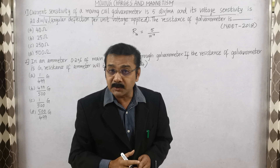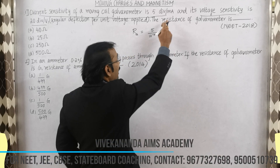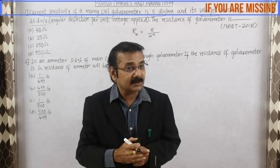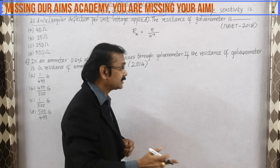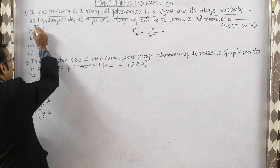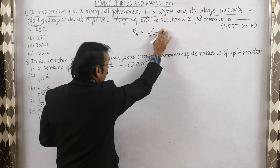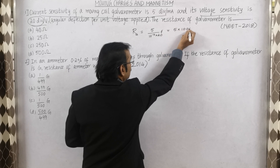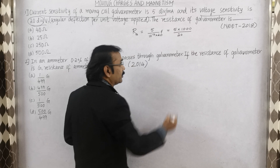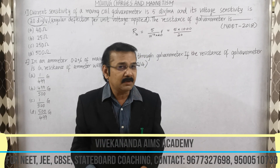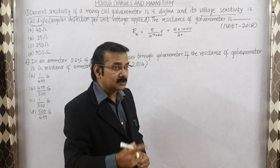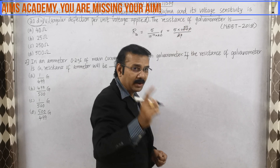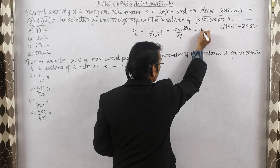Why do we put 10 to the power minus 3? Because the sensitivity is given per milliampere, and to convert milliamperes into amperes we divide by 10 to the power minus 3. So the first step gives us 5 over 10⁻³. The next number, 20, is multiplied in the denominator. So we get 5 into 1000 divided by 20. After simplification — cancelling zeros and dividing — our answer is 250 ohms.